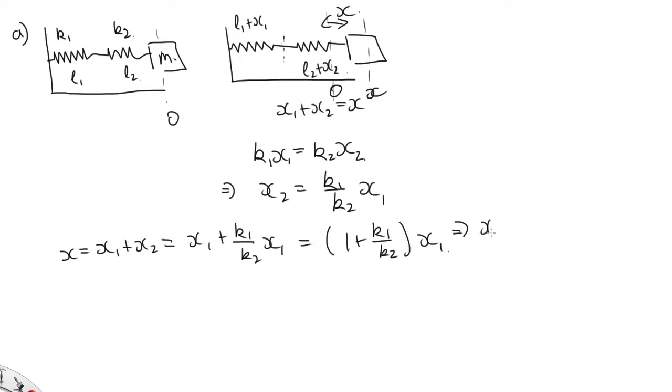So x1 is equal to x over 1 plus k1 on k2. Multiply the top and the bottom by k2, and we end up with k2 x over k2 plus k1.